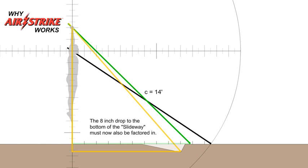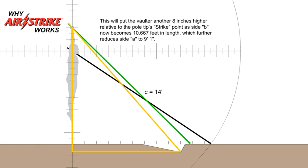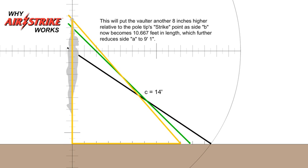The 8 inch drop to the bottom of the slideway must now also be factored in. This will put the vaulter another 8 inches higher relative to the pole tip's strike point, as side b now becomes 10.667 feet in length, which further reduces side a to 9 feet 1 inch.